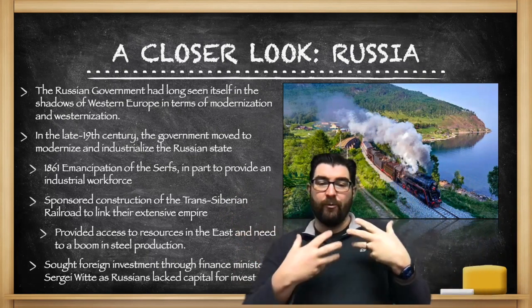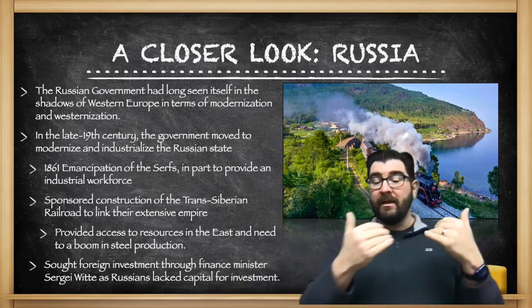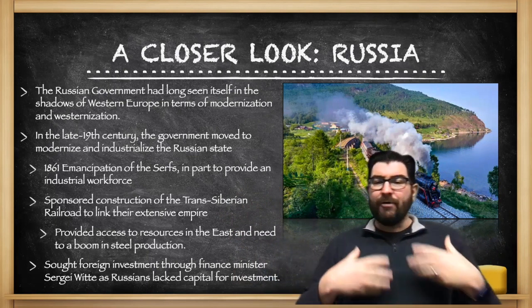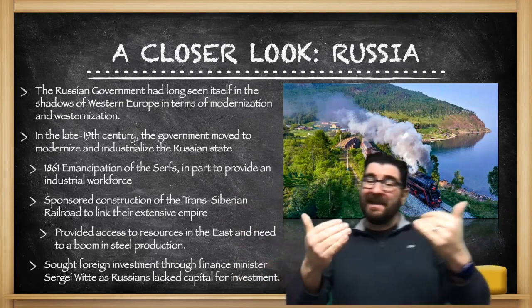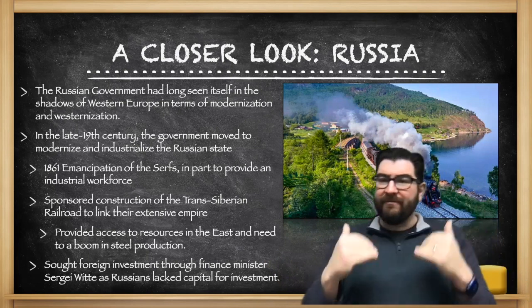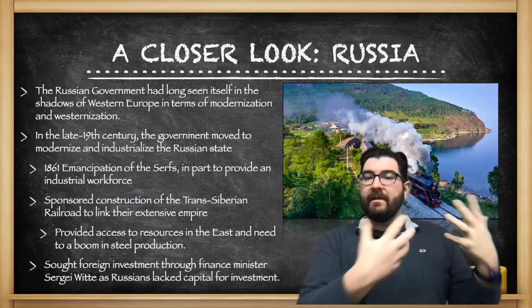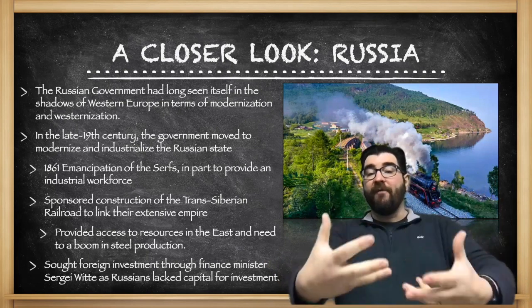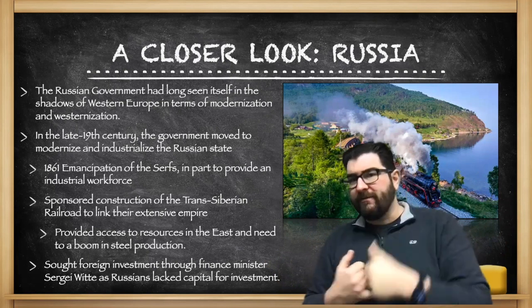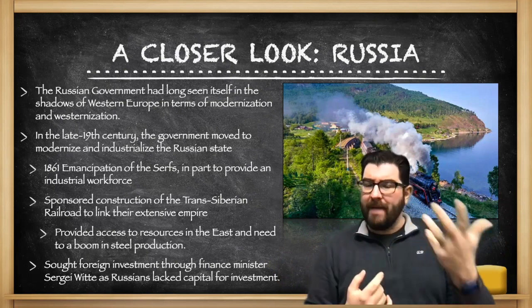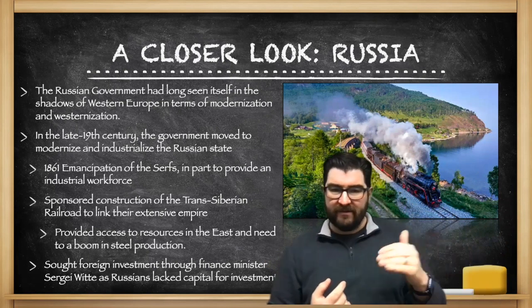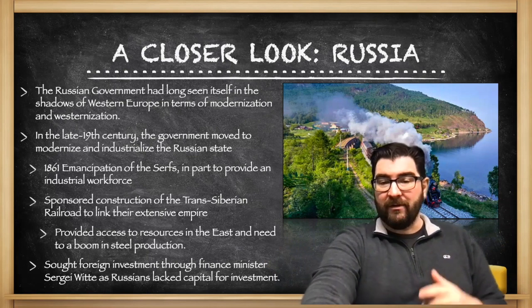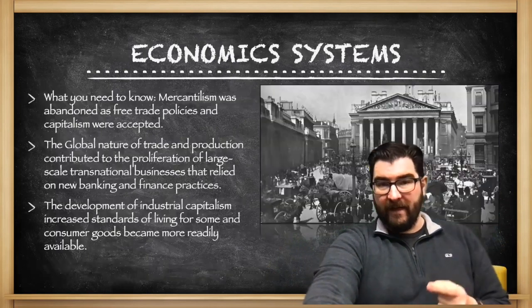The Trans-Siberian Railroad linked the entire empire from east to west and provided easier access to resources found in the east, which was a boom in steel production for the Russian state. Russia, because it lacked the investment capital that England had, sought foreign investments through their finance minister, a man named Sergei Witte, as Russians lacked that capital for their own development.